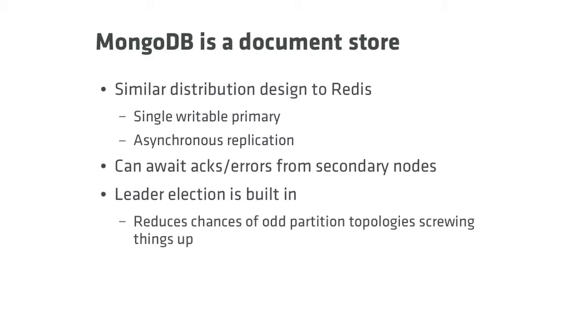Moving from I-don't-know-what-sort-of-consistency to CP — let's talk about Mongo. Mongo is a document store with a similar distribution design to Redis: asynchronous replication, single writable primary — but it's got a twist. You can await the acknowledgements and errors from the secondary nodes. When I make a write, I can say don't return success until I've seen three or four nodes actually commit it. I want to make sure my write is not only on durable storage on the primary but has also been replicated.